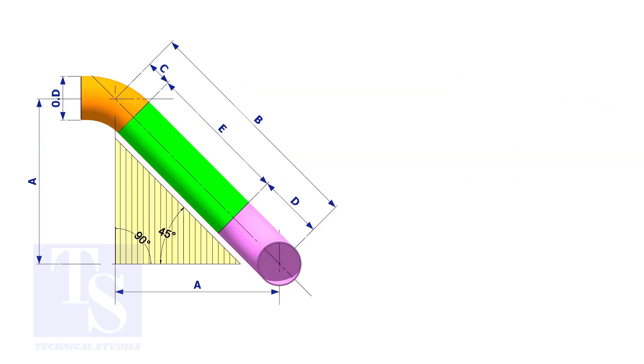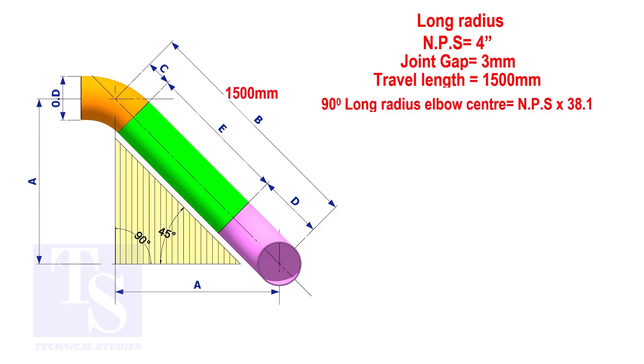Assume that the elbows are long radius. Calculate the true length of the pipe. The elbow center is the nominal pipe size multiplied by 38.1. So, the elbow center of the 90 degree elbow is 152.4 millimeters.